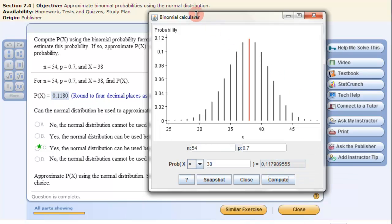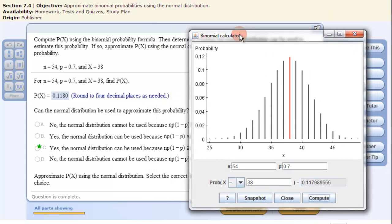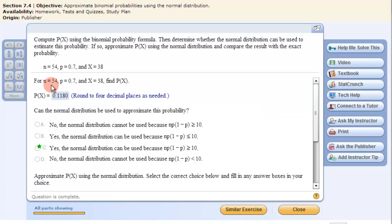So that's showing the probability of a binomial distribution found with the binomial calculations. Now, it says, can the normal distribution be approximated to this probability? So now we want to know, can we use the normal curve to approximate this probability rather than using a binomial probability calculator? And we can because the N times P times 1 minus P is greater than 10.